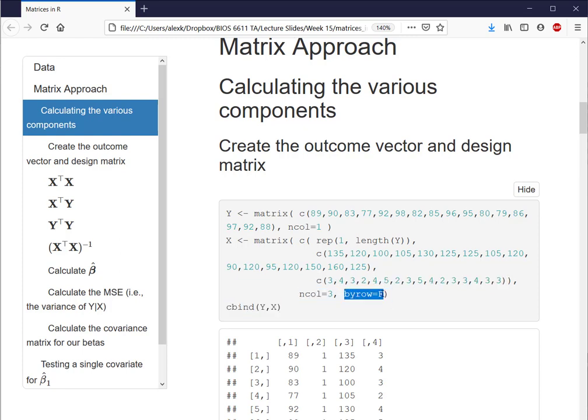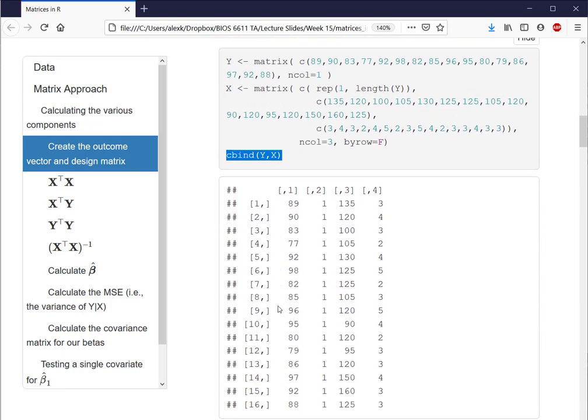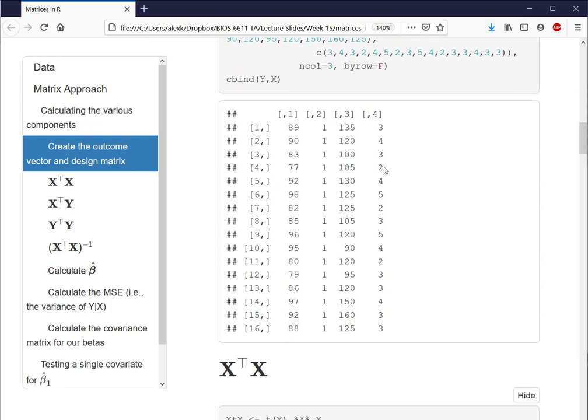We also specify then that there are three columns, and we don't want to enter that information by row because we're providing the information in a format that it's each column. And just for the sake of viewing this data, we're going to concatenate the column vector Y and the design matrix X together just to verify that we've entered our information and take a look at it. And so we see that here, where again the first column in this C bind YX is our outcome, and then our design matrix is really contained in columns 2, 3, and 4.